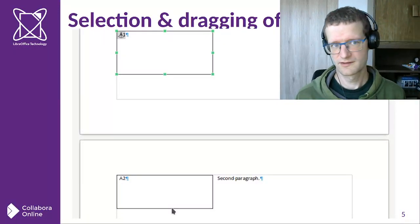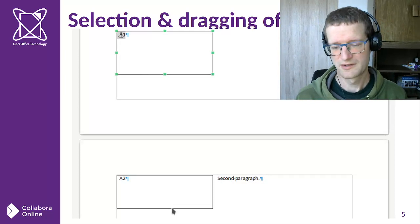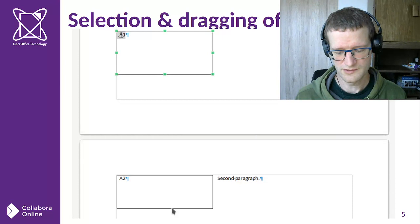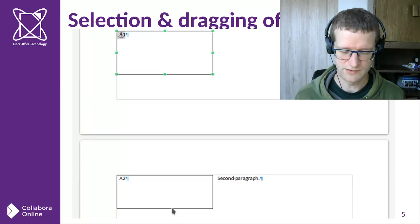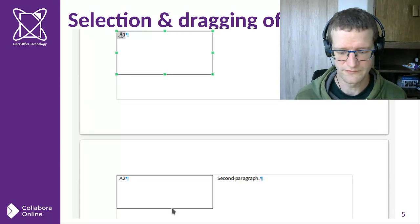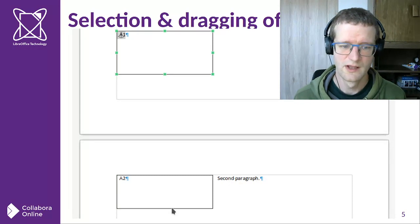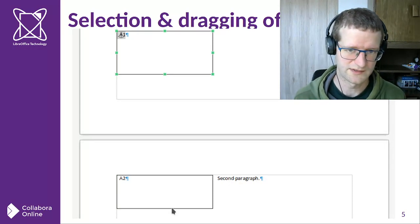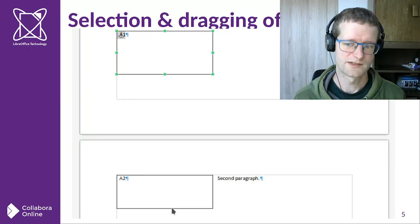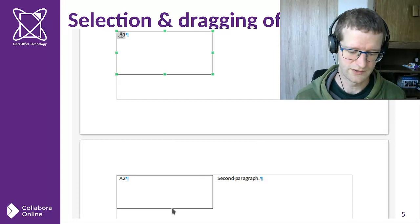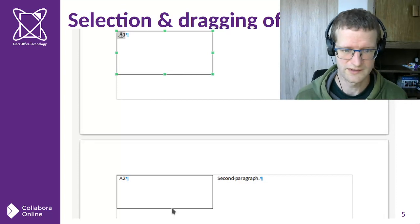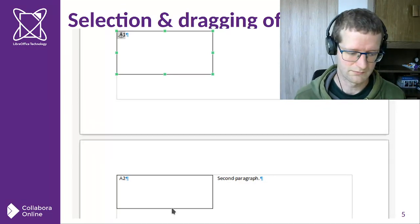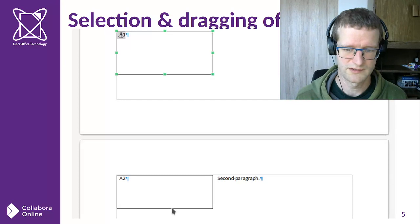That looks simple, but the complexity comes from how this feature interacts with various other existing Writer features. We want to provide a consistent experience, so what follows is a selection of areas where multi-page floating tables interact with existing functionality.